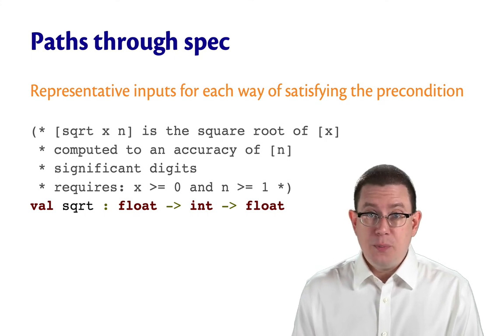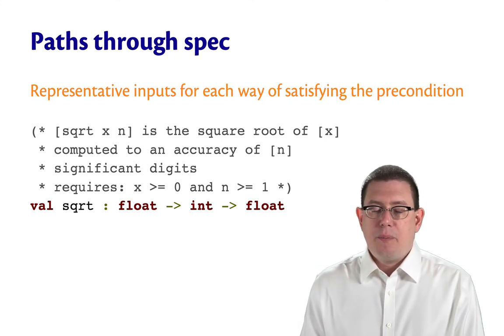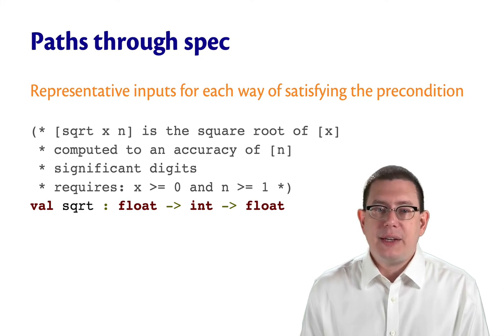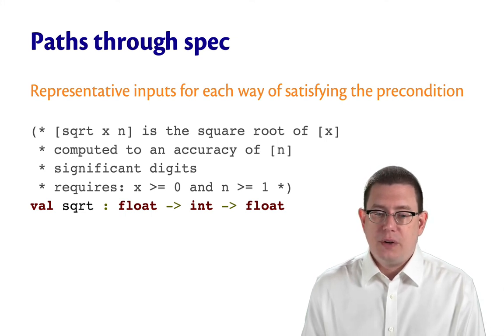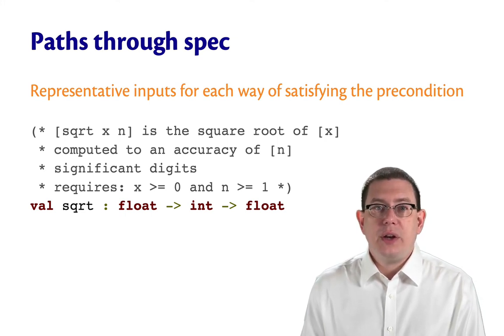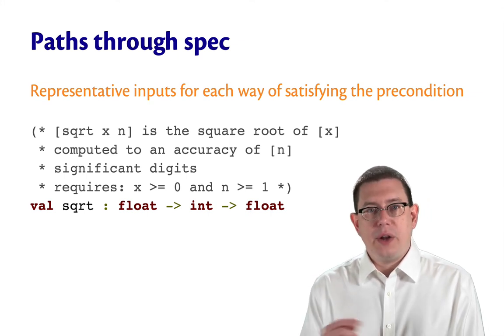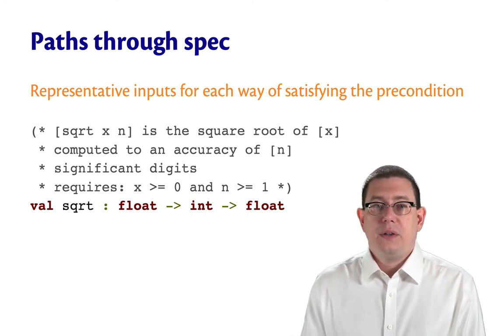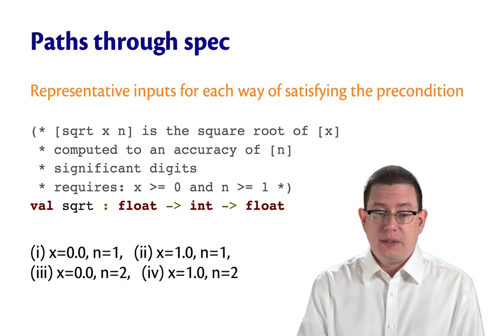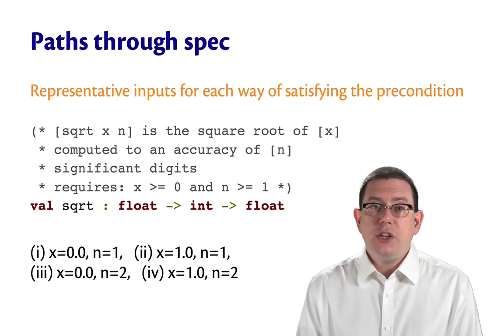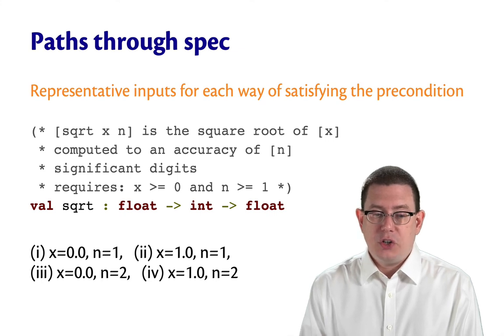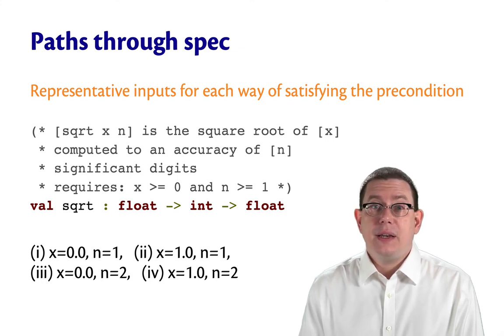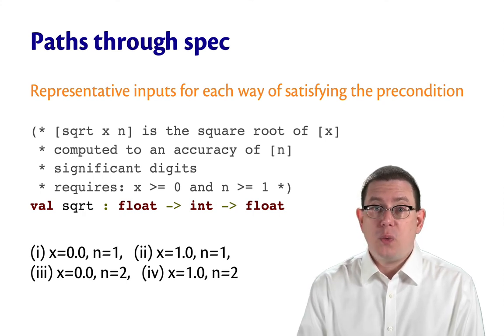Once more, a lot of different inputs we could pass to this. But there are really four representative ways of satisfying the precondition, and it has to do with the greater than or equal there. Either x is equal to zero or is greater than. Either n is equal to one or is greater than. So we could write four different test cases for each of those ways of satisfying the precondition. That gives us a set of black box tests through that precondition and all the ways of satisfying.